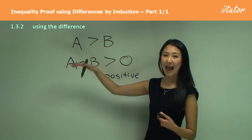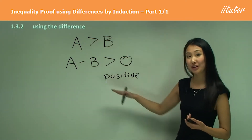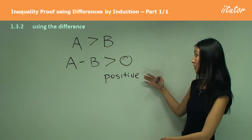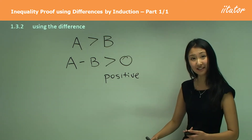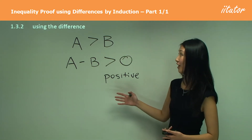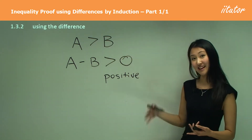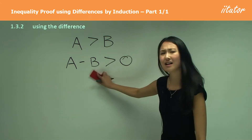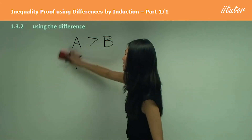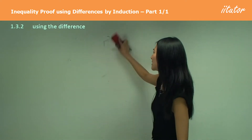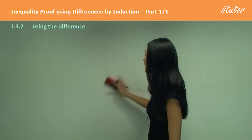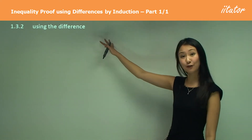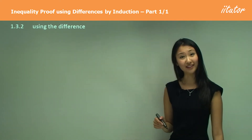It doesn't matter if it's B or A, as long as you follow the general sign and prove whether it's positive — or sometimes negative — to show that one side is greater than the other. This is a really good method to have on hand because sometimes with these inductions you can get a little lost and not know exactly where to start. If that occurs, you can always use the difference method for your inductions with inequalities.